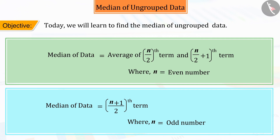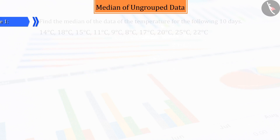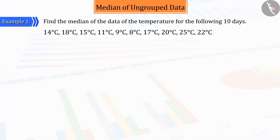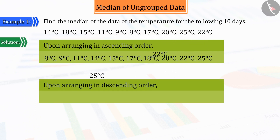We can assume from the name 'median' that there must be some involvement of a centre point here. This means that the median is the value which separates the observations exactly into two parts. Can you tell what would be the median of the temperature of the following ten days? For median, we first arrange the observations in ascending order or descending order.